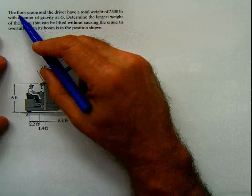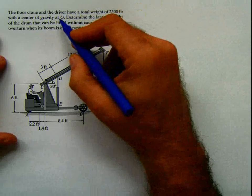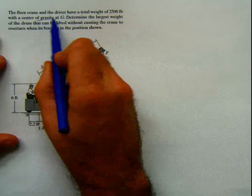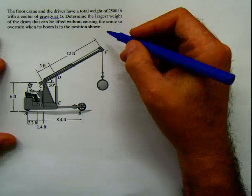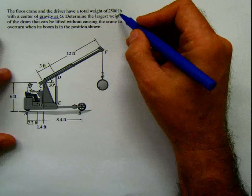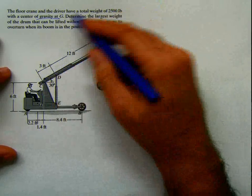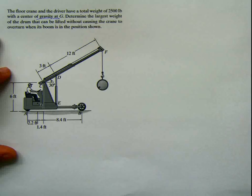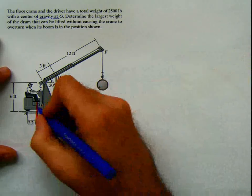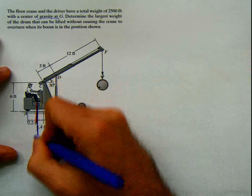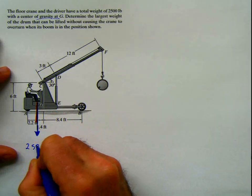The problem says the floor crane and the driver have a total weight of 2,500 pounds with the center of gravity at G. We've been told for a long time that we have to consider the total weight applied at the center of gravity. So we're going to have here at G a weight of 2,500 pounds.